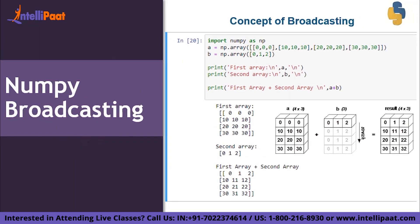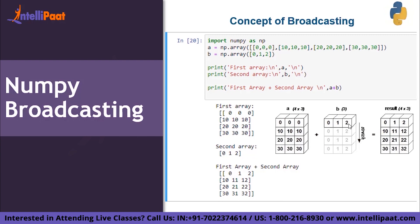Next is NumPy broadcasting. When you have two arrays with different dimensions — but with the same number of rows or columns — NumPy broadcasts the smaller array and adds it to each row of the larger array. For example, adding [0,1,2] to [[0,0,0],[1,2,3],[4,5,6],[5,6,7]] adds [0,1,2] to every row.